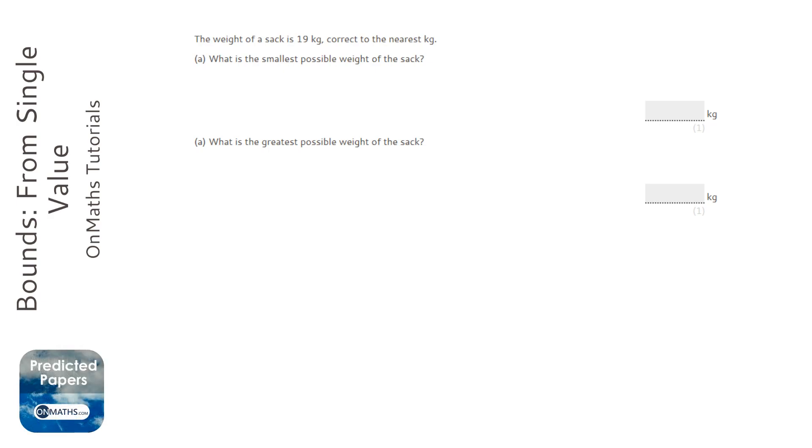Until we realize that it is rounded to the nearest kilogram. The first diagram I draw is just a line, and I put 19 in the middle. I think to myself, what was the next one down that it could have been if it wasn't 19?